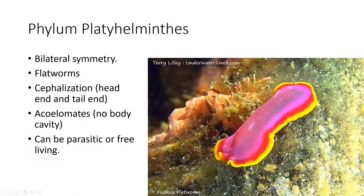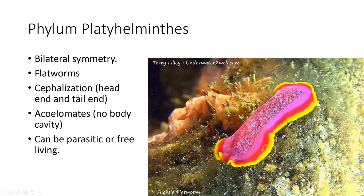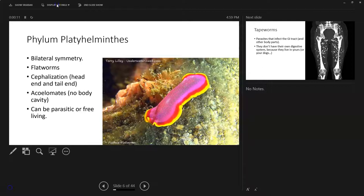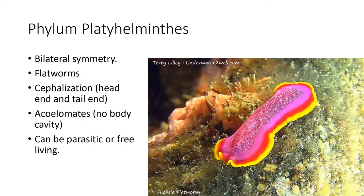Flatworms have a head-like region with an eye spot. Many are hermaphrodites. Cephalization means head. They are acoelomates — they have no body cavity, since they are smooshed flat with no hollow space, just a digestive system running through them. Some are parasitic, some are free-living. We'll mostly talk about the parasitic ones since the free-living ones don't affect people.